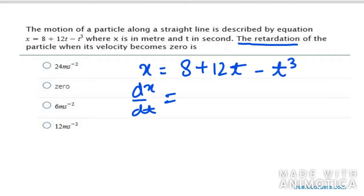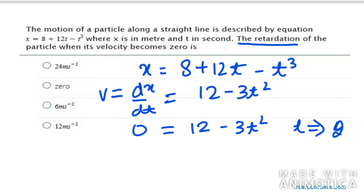So this will be 12 minus 3t square. Now velocity is actually 0 in this case. Velocity equals 0 can give us t value. When we solve this we will get t equal to 2 seconds. We actually get two values that are minus 2 and plus 2. We need to ignore minus 2 as t can't be negative.